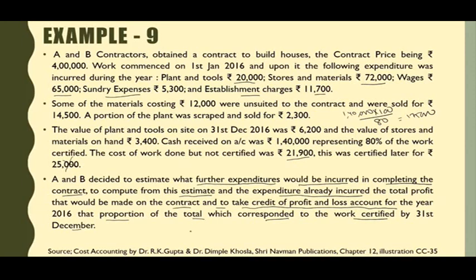Matlab kya hua iska? Jitna bhi estimated profit aayega, usme se P&L account ke liye proportion lena hai. Total matlab total contract price — which correspond to the work certified. Yahaan se formula pehle se hi de diya, hame nikalane ki zarudat nahi hai. Hame bata diya ki jitna estimated profit aayega, uski hame ye ratio leni hai — total contract price se correspond karna hai work certified ko. To work certified upon total contract price.